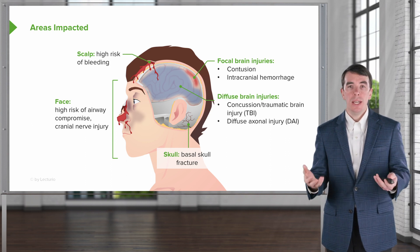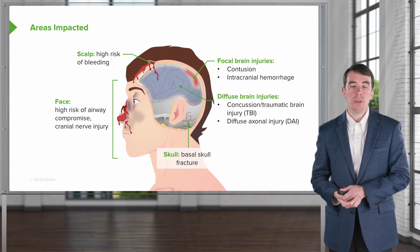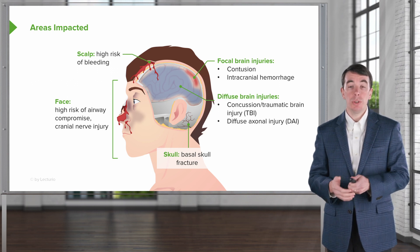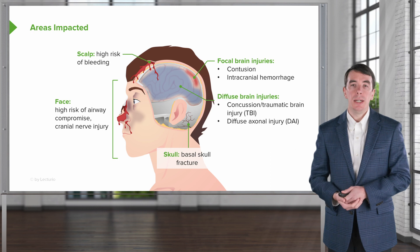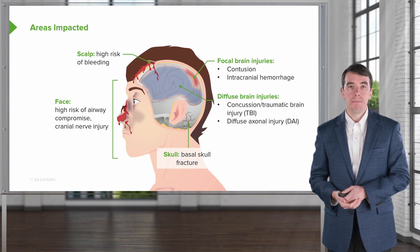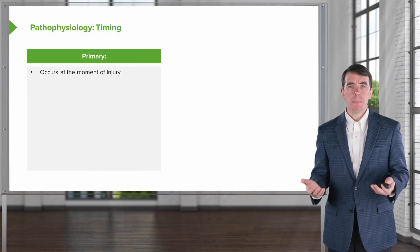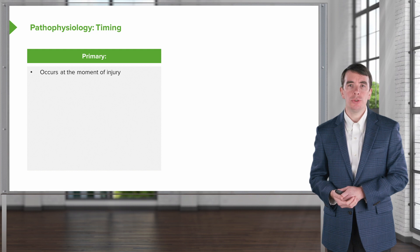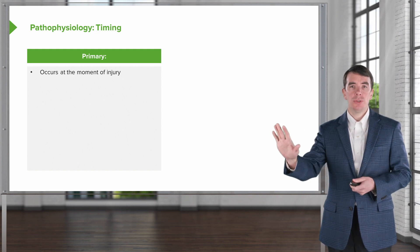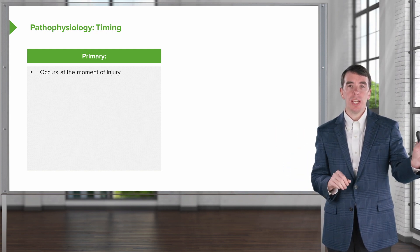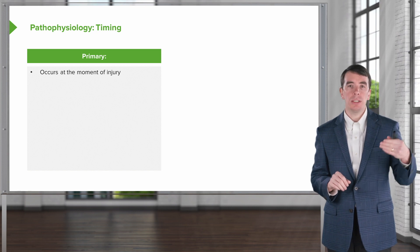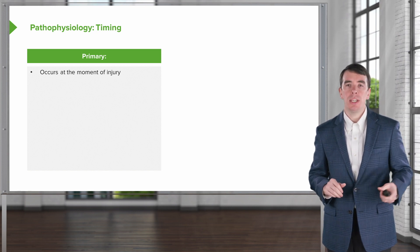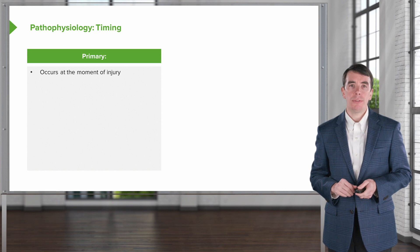Concussion or traumatic brain injury is a diffuse brain injury as a result of some type of traumatic injury, and then diffuse axonal injury, which is a more severe form of neural injury as a result of trauma. The pathophysiology can be divided into the primary injury to the brain and then potential secondary injuries that can occur because of the inflammatory response or biochemical changes that occur after an injury.